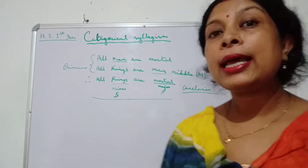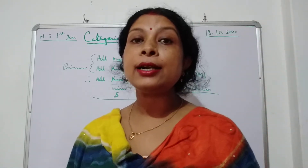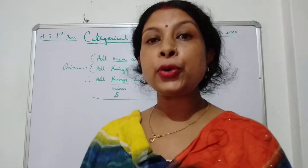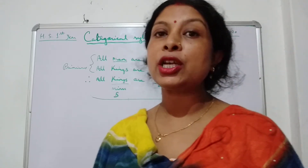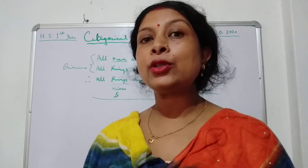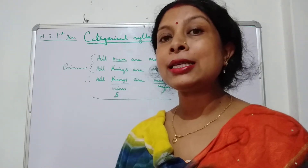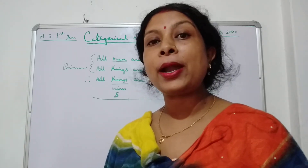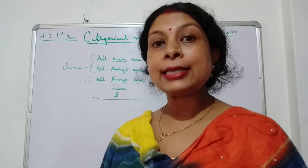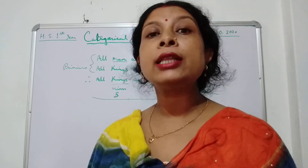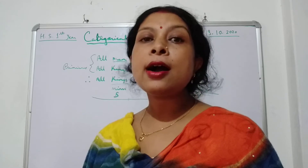In a Syllogism, there are six terms. Do you remember what a term is? A term is a word or a group of words which can be used as the subject or predicate of a proposition. A term has its own meaning — it has meaning on its own without the support of any other word or sentence. That is known as a term.